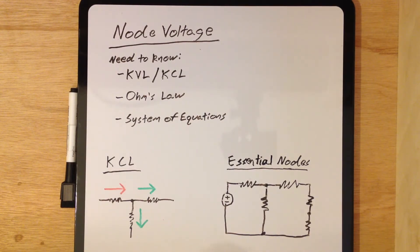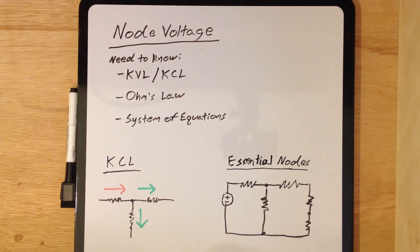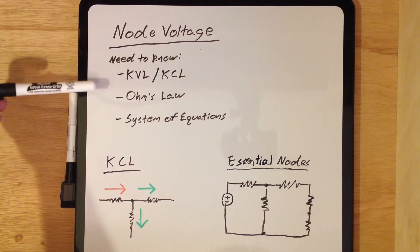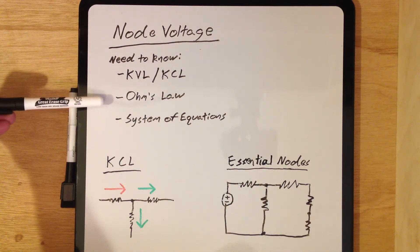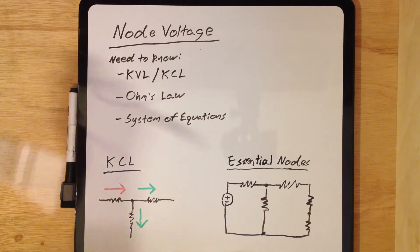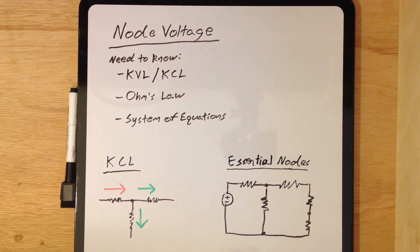Welcome to ECE at OU's Electronics Tutorial Series. Today we're going to be covering node voltage. Node voltage is a nice little tool that you can use to help you analyze circuits to determine the voltage and current at different points and branches throughout the circuit. The three things you'll need to know before we get started are Kirchhoff's voltage law, Kirchhoff's current law, Ohm's law, and how to solve systems of equations. We're going to assume you already know how to do these. You can also find some good information about these online or in your electronics textbook.